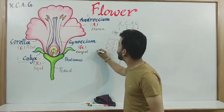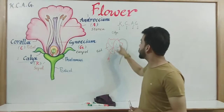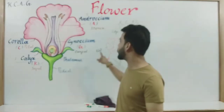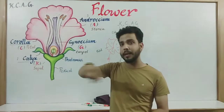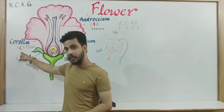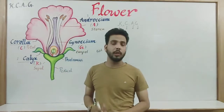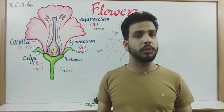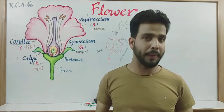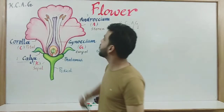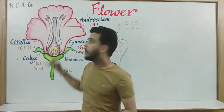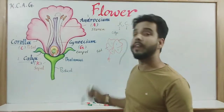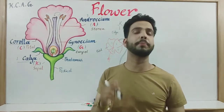The single unit of corolla is known as petal. These 5 petals are collectively known as corolla, while a single unit is known as petal. Corolla is the second part of the flower, represented by capital C. The main function of corolla is to attract insects for the process of pollination — the pollen grains produced inside the anther lobe reach the stigma of the flower, which is the phenomenon of pollination.